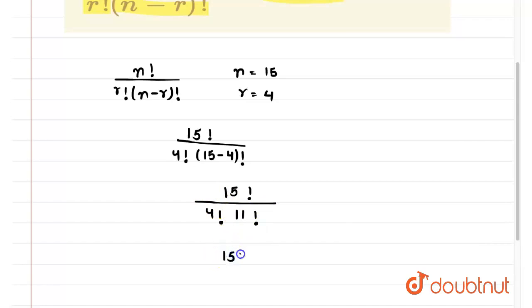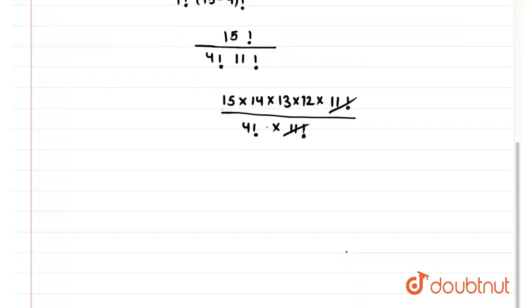So if we open these factorials, we will get 15 into 14 into 13 into 12 into 11 factorial upon 4 factorial into 11 factorial. From 11 factorial and 11 factorial got cancelled.